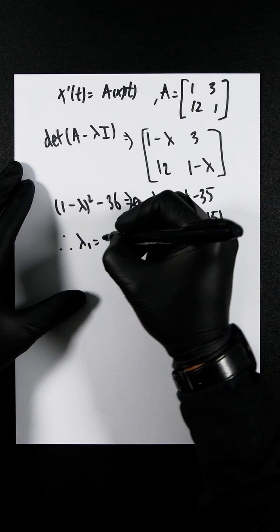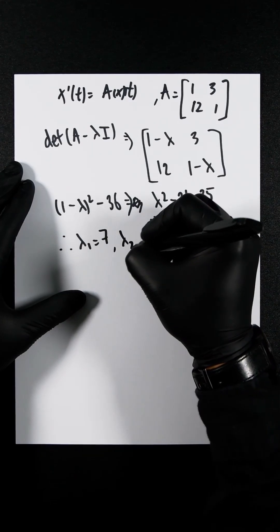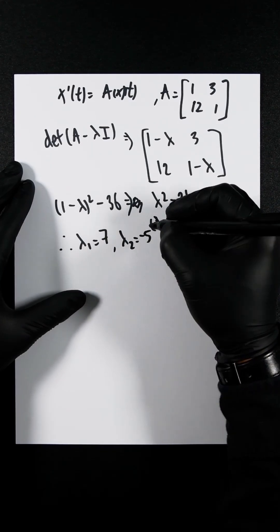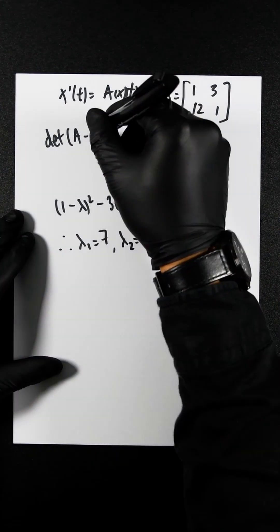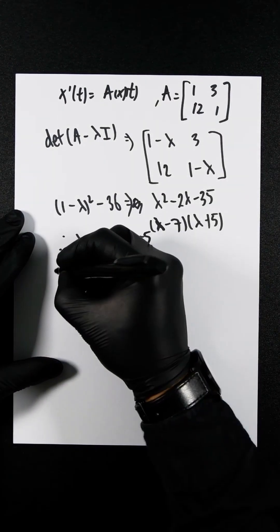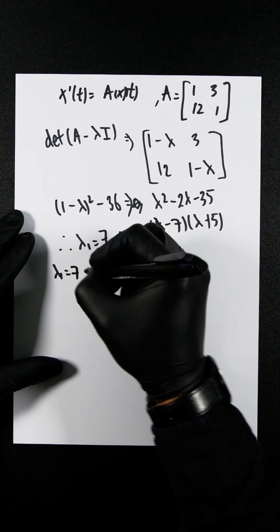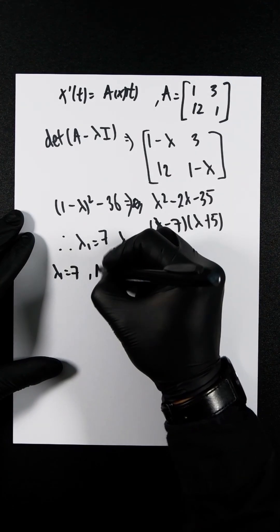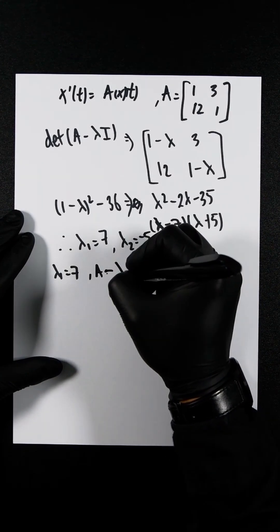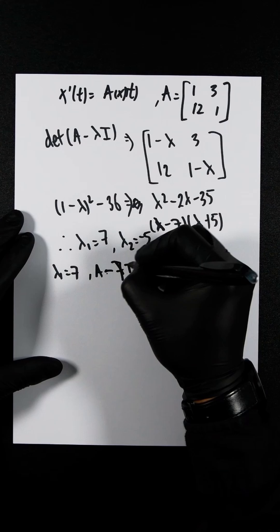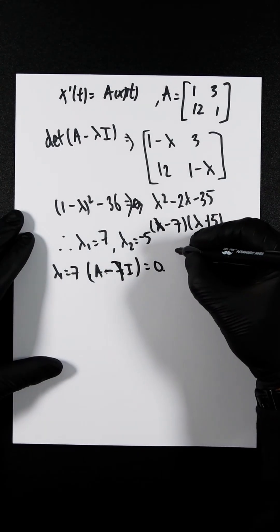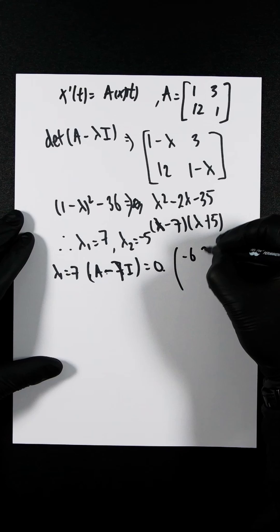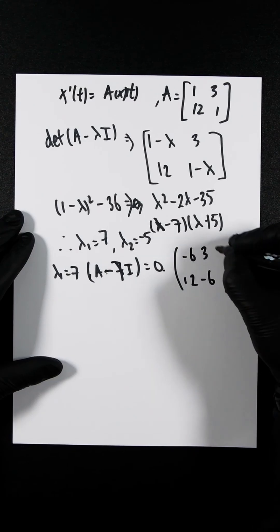Therefore, lambda 1 is 7 and lambda 2 is minus 5. Let's now solve for the eigenvectors. Plugging in lambda 1 equals 7, we get A minus 7I equals 0, giving us the matrix [-6, 3; 12, -6].